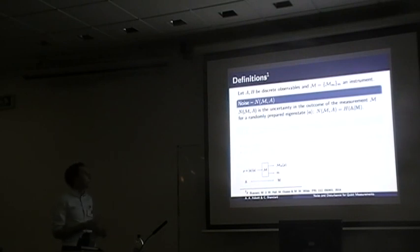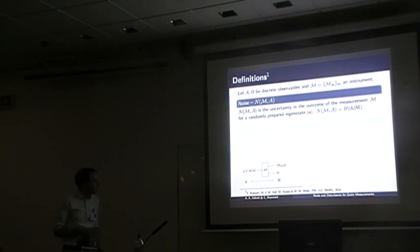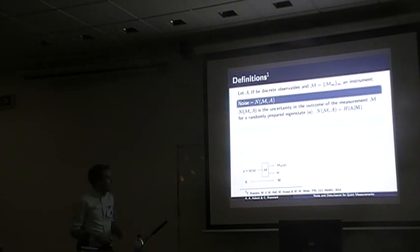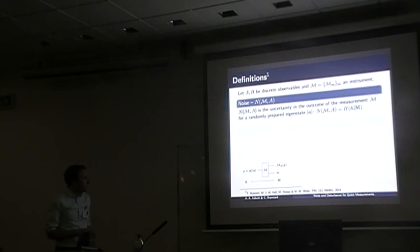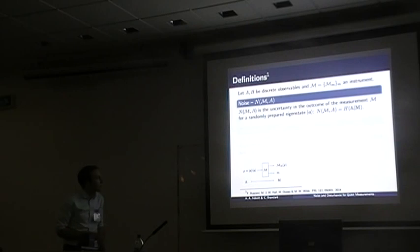I'll explain the definition operationally, mostly using diagrams. I consider discrete, non-degenerate observables, and model a measurement as a quantum instrument — the most general way to model a measurement. We consider a scenario where we prepare some eigenstates of observable A randomly with some probability, perform a measurement, and look at the outcome.